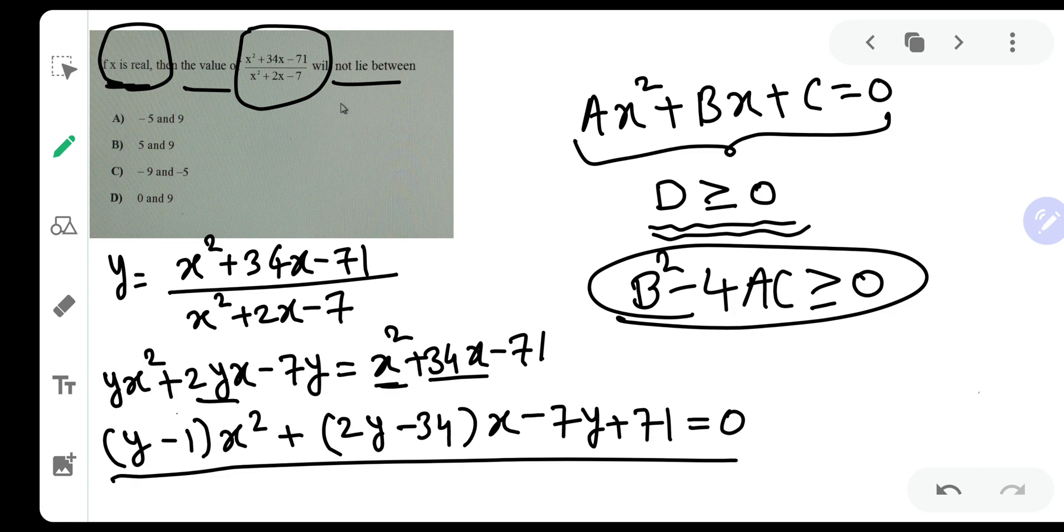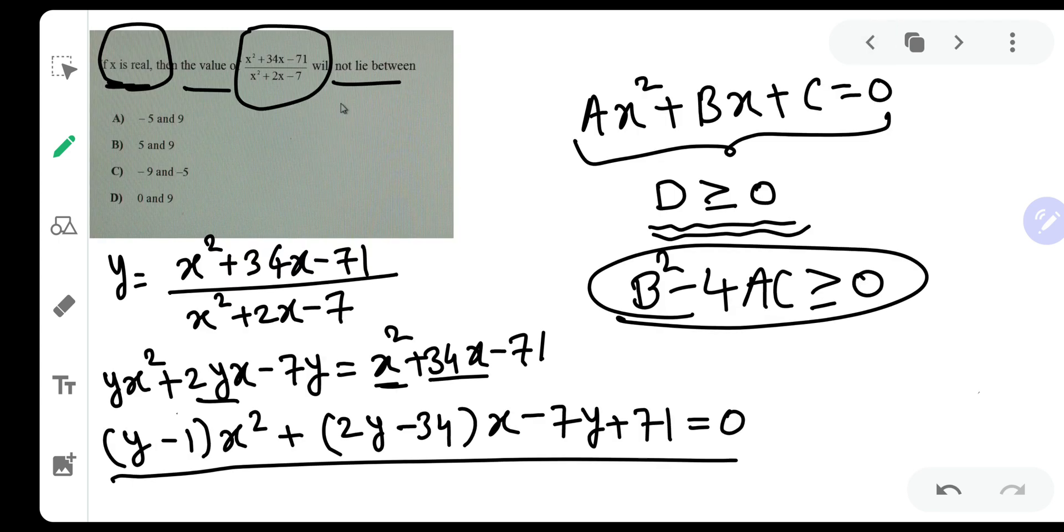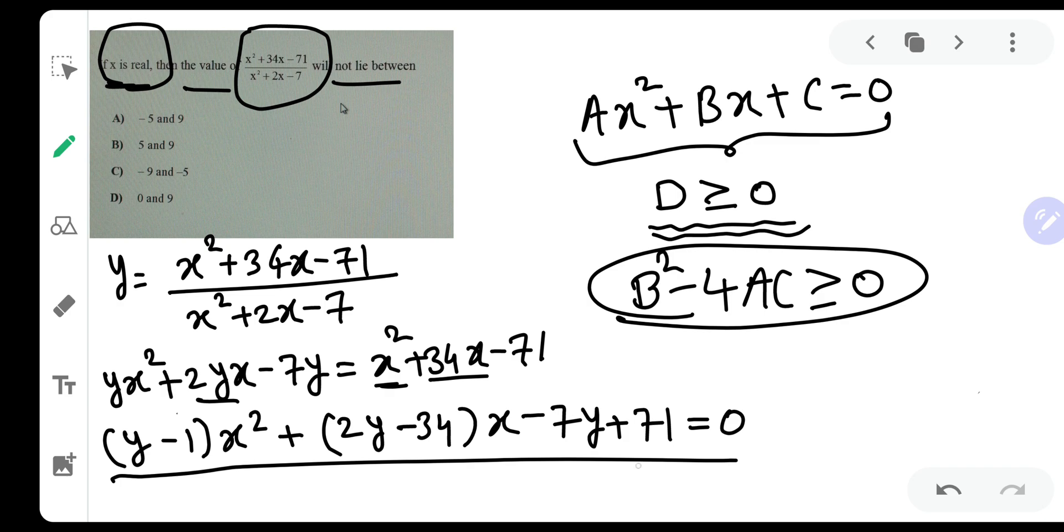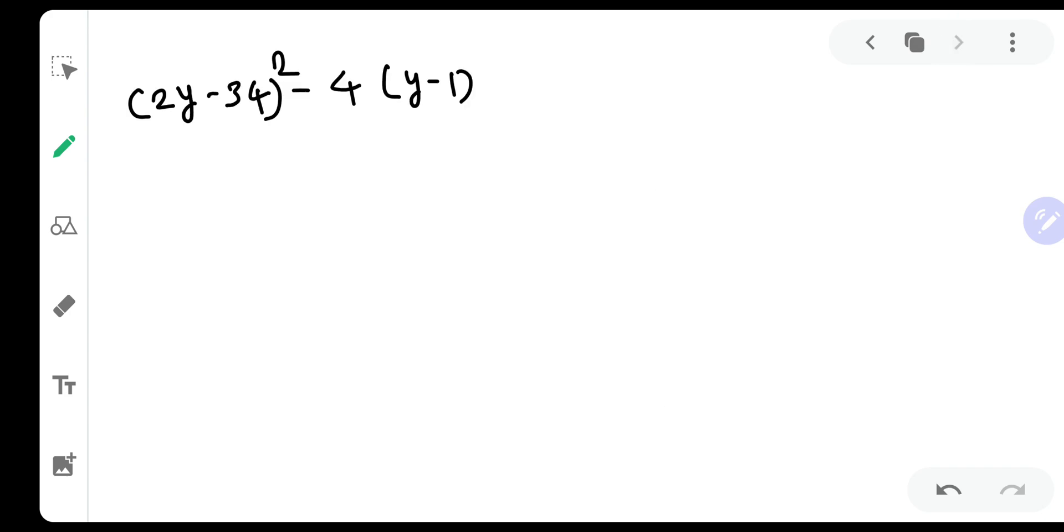What is our b? Our b is 2y minus 34. So let us write down (2y minus 34) the whole square minus 4 times a. What is the value of a? y minus 1. And then c value is minus 7y plus 71. Be very careful with this. This is the value of D which has to be greater than or equal to 0.